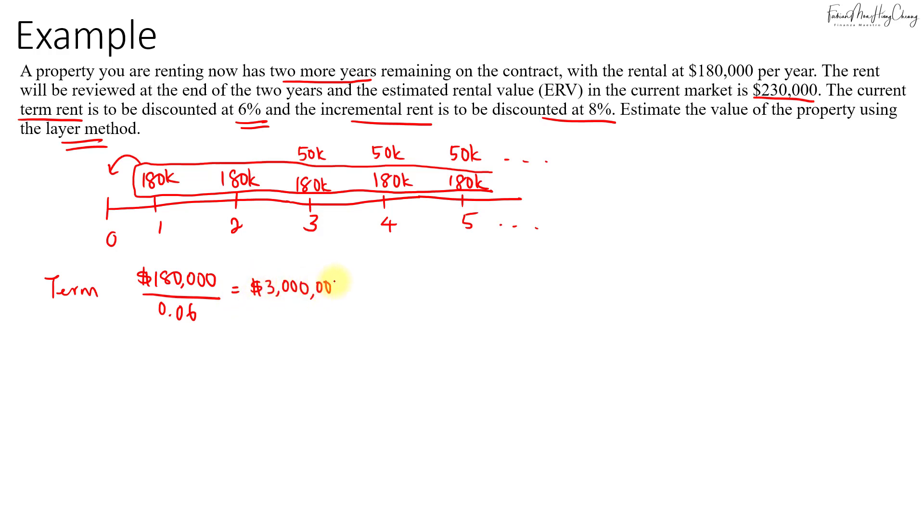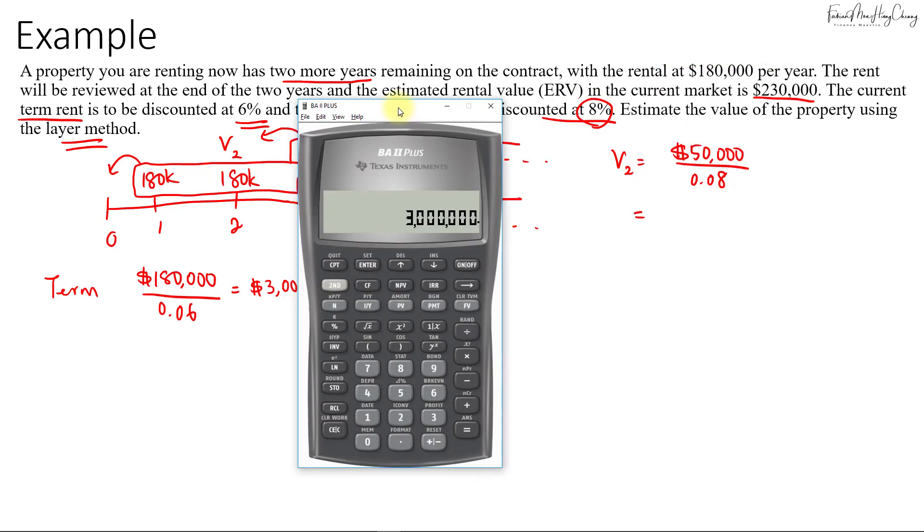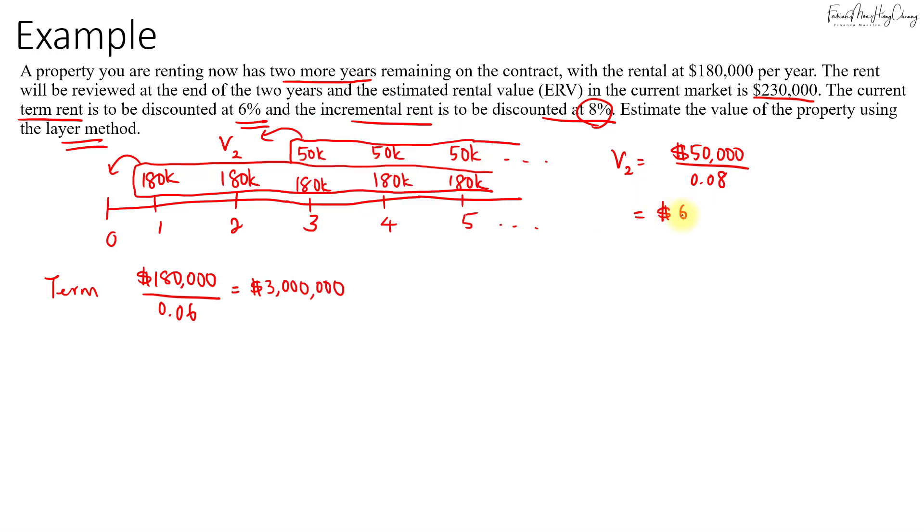For the incremental rent, the perpetuity starts from year three onwards. If I take $50,000 divided by 8%, that would bring the present value back to year two. So the value here in year two will be $50,000 incremental rent divided by 8%, which equals $50,000 divided by 0.08, so that's $625,000.